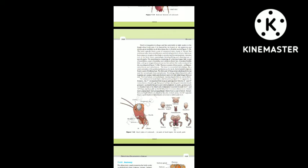The head is triangular in shape and lies anteriorly at right angles to the longitudinal body axis. It is formed by the fusion of six segments and shows great mobility in all directions due to a flexible neck. The head capsule bears a pair of compound eyes. A pair of thread-like antennae arise from membranous sockets lying in front of the eyes. Antennae have sensory receptors that help in monitoring the environment. The anterior end of the head bears appendages forming biting and chewing type of mouthparts.